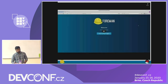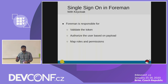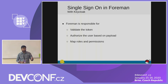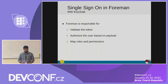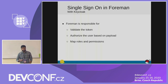The values that it will get — like first name, last name, or email address — will come from the token received from the Keycloak application. And that's how single sign-on works in the case of Foreman and Keycloak integration. Foreman is responsible for a number of things: it validates the token — if you are getting the particular token, whether it is valid for that application or not, whether it is expired or not, or whether it is the client that is expected. The next is to authorize your user based on the payloads — that means Foreman gives the number of roles and permissions to that particular user based on the external user group, mapping roles and permissions in Foreman.